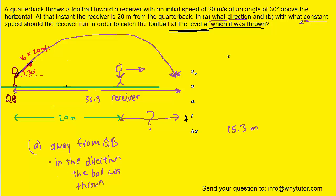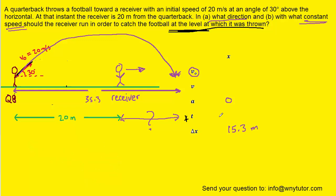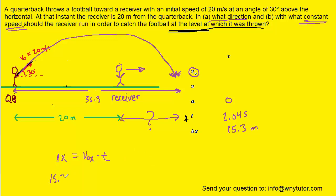Part B mentions that the receiver is moving with constant speed, so the acceleration is zero. We want to find the initial velocity of the receiver. The time was determined earlier to be about 2.04 seconds — that's the time the ball takes to reach the catch point, so we use that same time. Returning to the kinematic equation and eliminating the acceleration term, we plug in a displacement of 15.3 meters and a time of 2.04 seconds, then divide both sides by 2.04. The initial velocity of the receiver is roughly 7.5 meters per second. That is the correct answer to Part B.